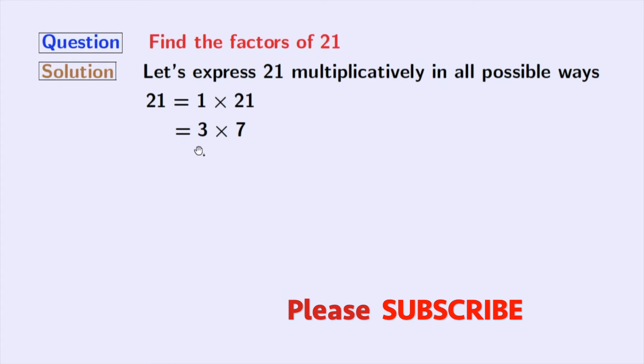Between 3 and 7 comes 4, 5, and 6, but these 3 numbers do not divide 21. Next, 7 is already here so we will stop right now.